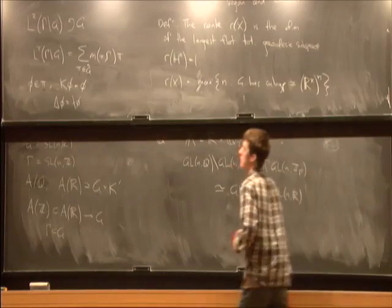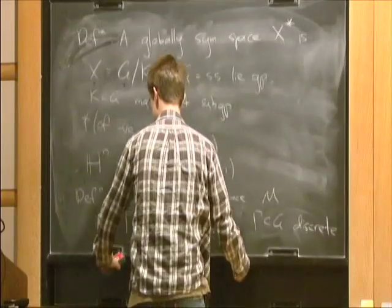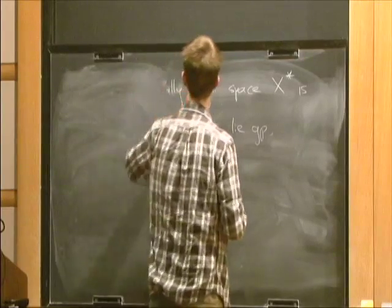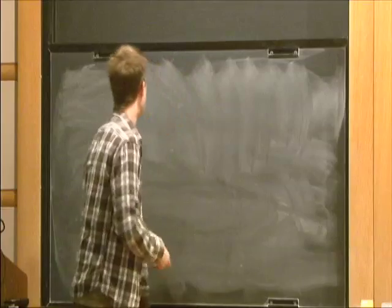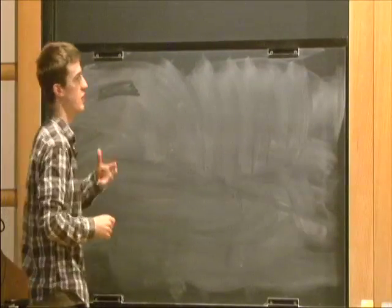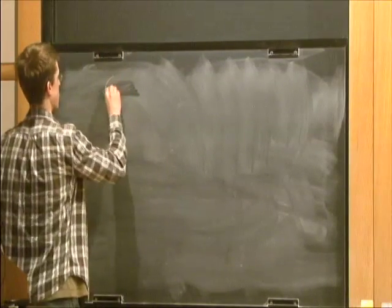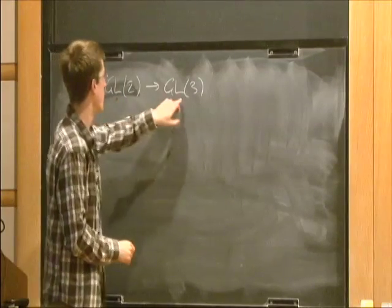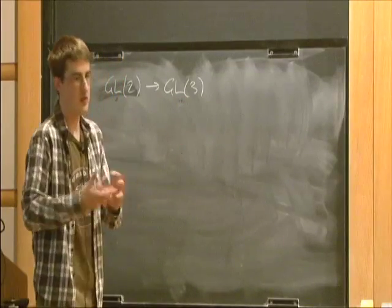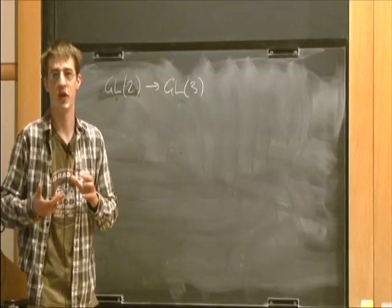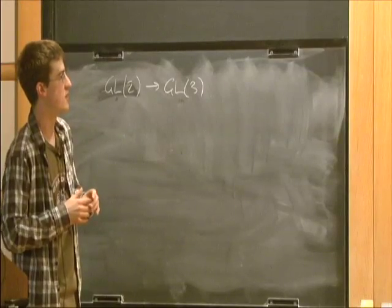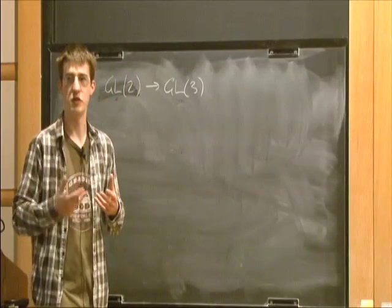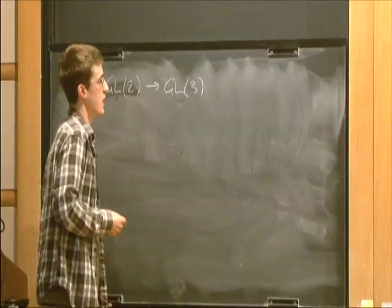In particular, what this means is, if we have a map from one group into the other, if we have a map from GL_2 to GL_3, and if we have a Galois representation into this group, we should be able to compose it with that and get a Galois representation into GL_3. So we should be able to transfer these cohomology classes between different groups. This is roughly what the functoriality principle is all about. We don't know this in general, but there's a baby version of this which is still very useful for the purposes of constructing cohomology classes on arithmetic manifolds, and this is the theta lift.